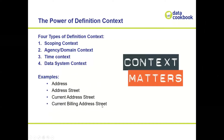'Current billing address' is really putting in a domain context. So you've got the time context of 'current,' the domain of 'billing,' and the scoping of 'street.' We're talking about the current billing address and the street part of that address. You can also have an agency or domain — for example, my current street address for federal tax residency, submitted to the U.S. government.